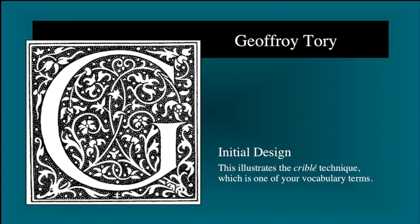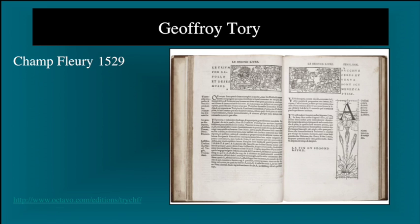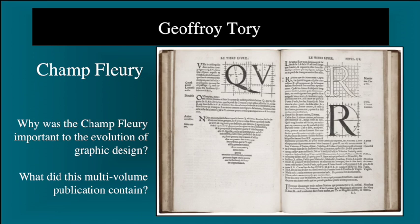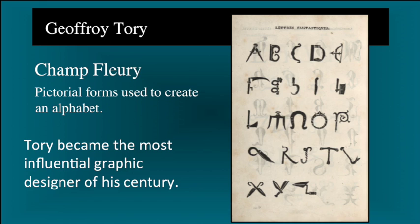The small angel in the right-hand corner was cut away in subsequent books by Tory. Tory was famous for his Roman capitals. These initials were the perfect accompaniment to the lighter, new Roman types by Garamond and very popular. The capital G demonstrates the cribleé technique — please look closely at the background and what do you see. In 1529, Tory published the most influential and important book of his career, the Champs Fleury, which he wrote, illustrated, printed, and bound. This three-book series is a treatise on typography and his most famous work. Be sure to know why the Champs Fleury was important to the evolution of graphic design and what this multi-volume publication contained. On this page, we see Roman capitals constructed using scientific or mathematical principles on a grid, and another page shows pictorial forms used to create an alphabet. Tory became the most influential graphic designer of his century.